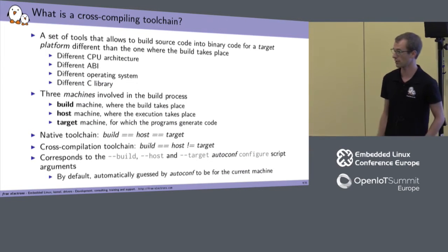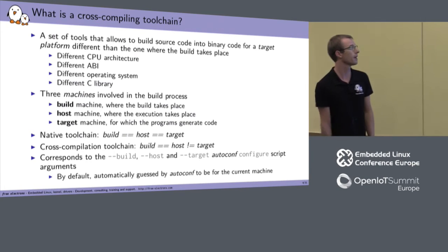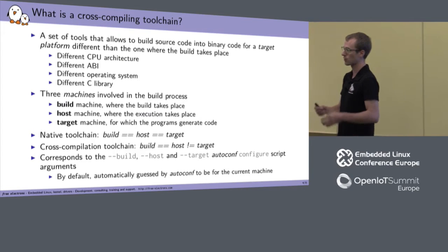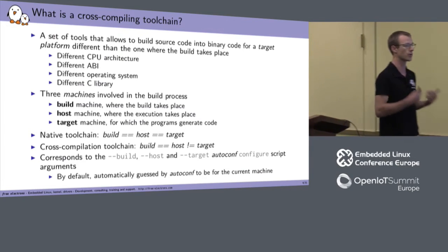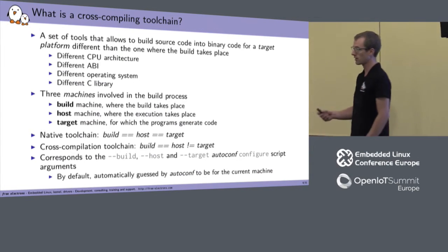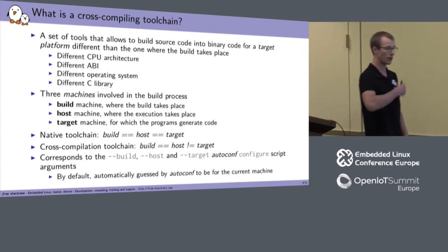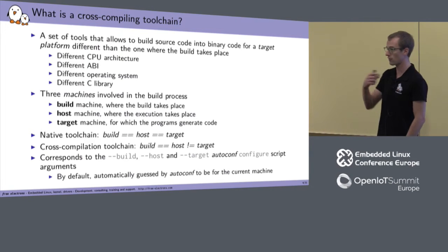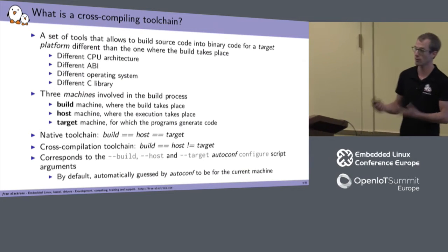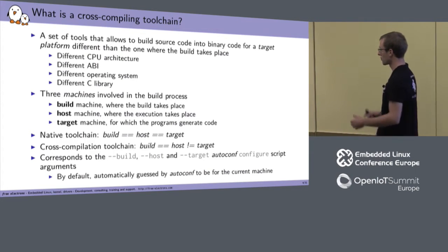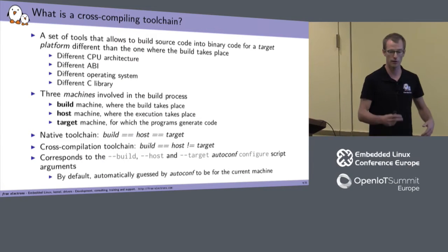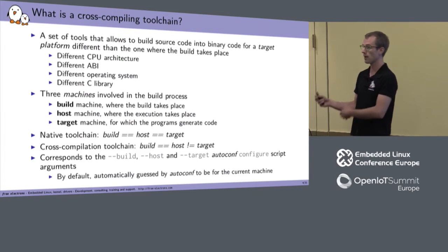So what is a cross compilation toolchain? It's a set of tools that allows you to build source into binary code for a target platform that's different from the one you're currently running on. Most of the time people think of it as different CPU architecture, but it can also be different operating system, different C library, different ABI. For example, if you're on Linux x86 and you want to build an x86 binary for Windows, you're doing cross compilation even though it's the same CPU architecture.